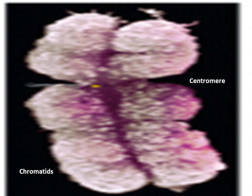As seen in the scanning electron micrograph of a condensed metaphase chromosome, it has replicated and comprises two chromatids, each containing one of the two identical DNA molecules.